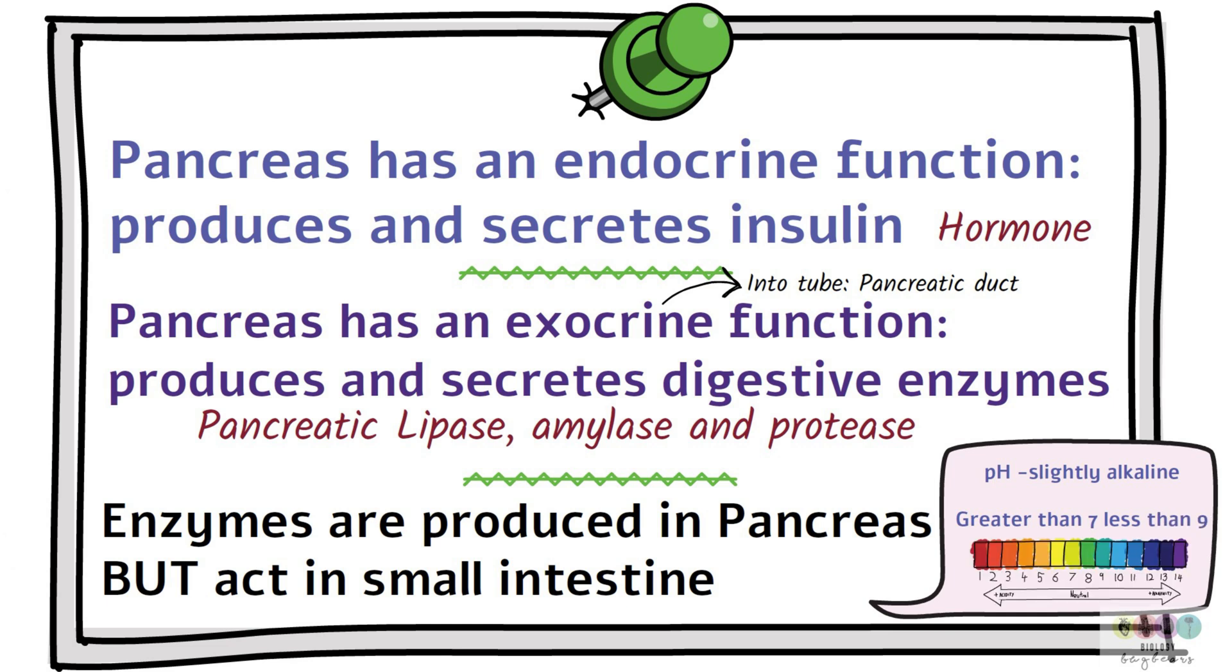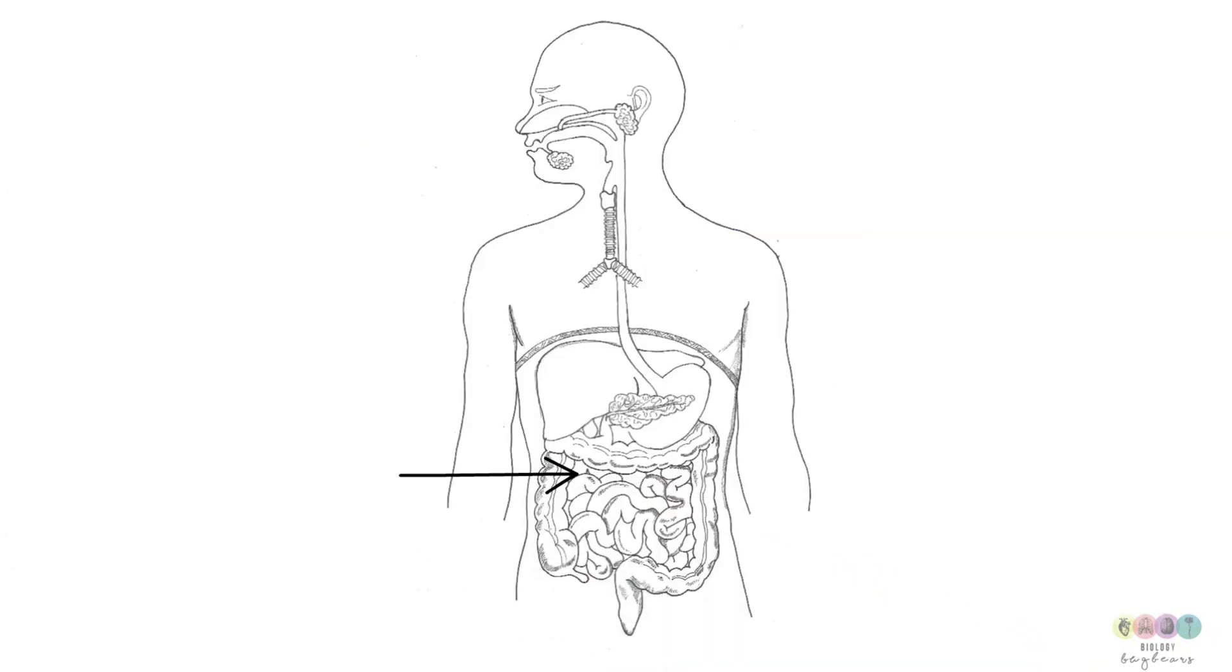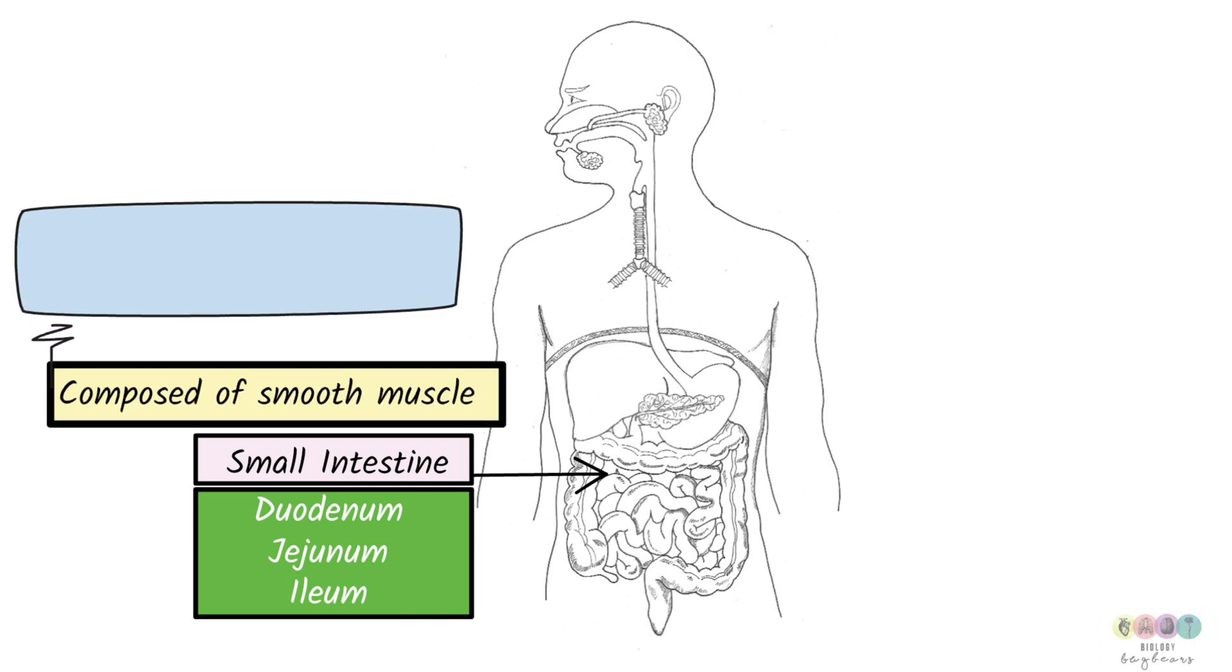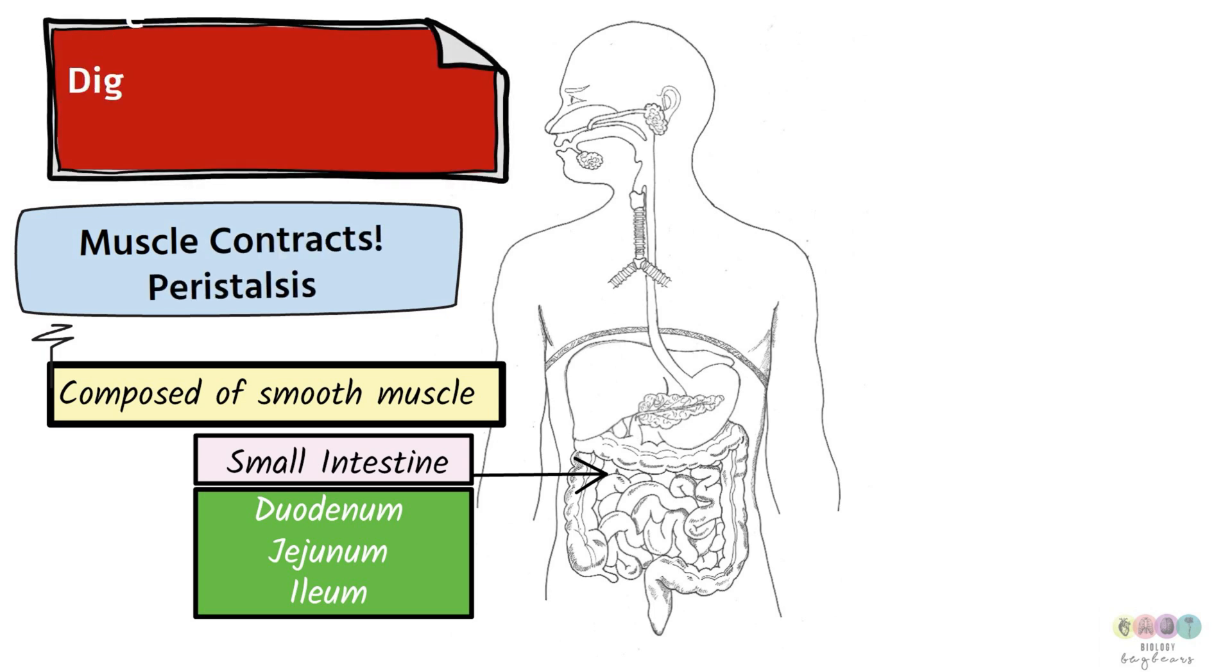So the acidic chyme left the stomach and has entered into the small intestine. The upper part of the small intestine known as the duodenum. The midsection is known as the jejunum. And the final section is known as the ileum. So we mostly are concerned with the duodenum and the ileum. All of the small intestine is made of smooth muscle. And smooth muscle can contract. So peristalsis is ongoing.